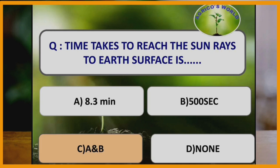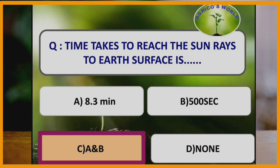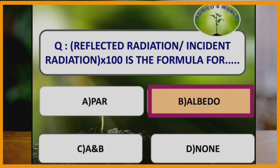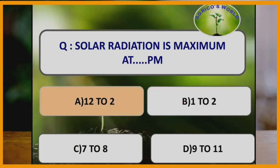The time taken by sun rays to reach the earth's surface is 8.3 minutes or 500 seconds. Reflected radiation divided by incident radiation is the formula for albedo.